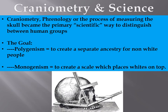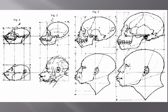Craniometry is this notion of measuring the skull, sometimes originally referred to as phrenology. It became a scientific way to distinguish between human groups. What these scientists were doing is robbing graves all over the place to acquire skulls, taking different measurements, all to push their argument of polygenism or monogenism. If polygenous, their notion was to create a separate ancestry for non-white people; if monogenous, to create a scale of intelligence based on skull size placing Caucasians on top.